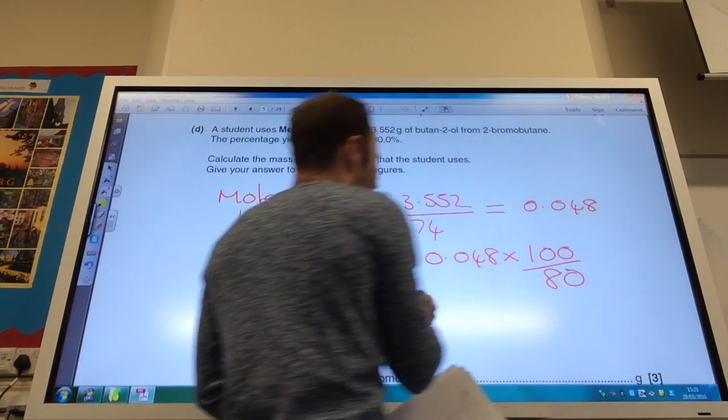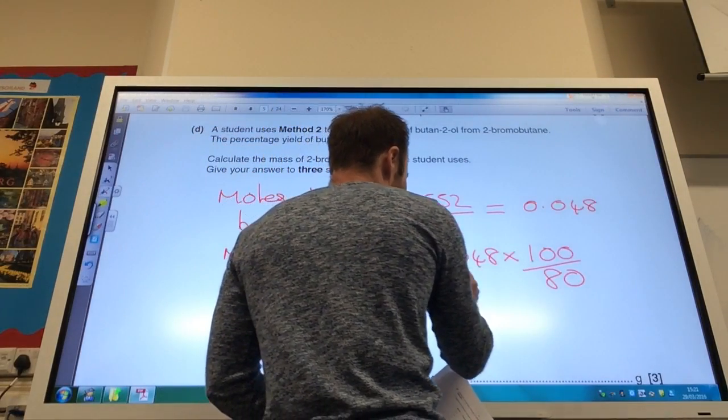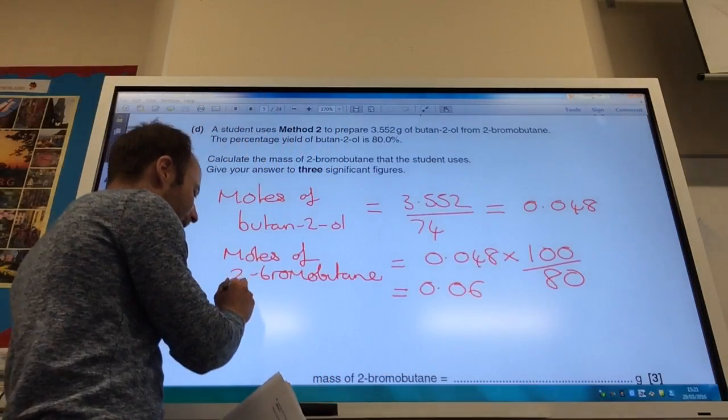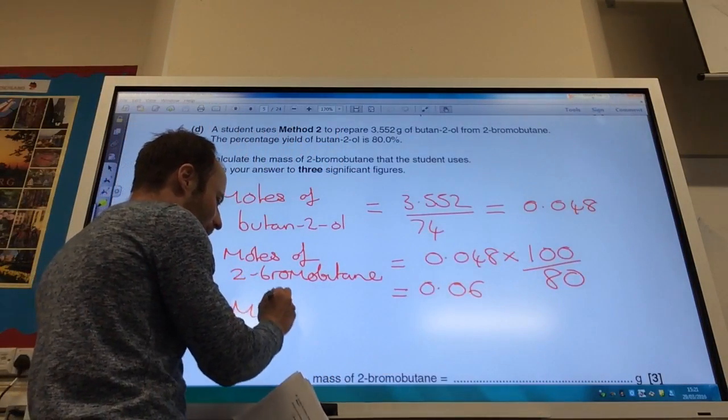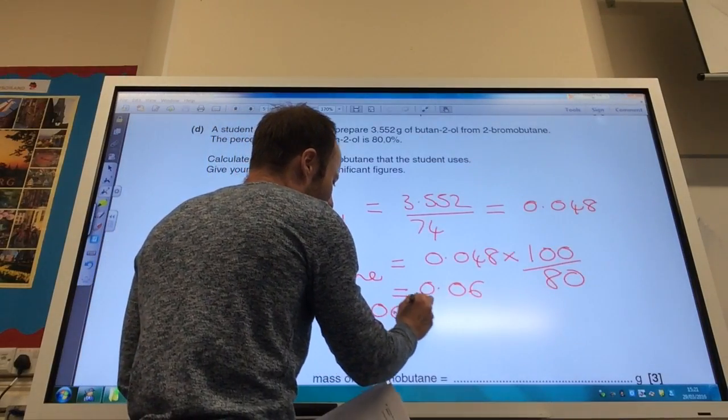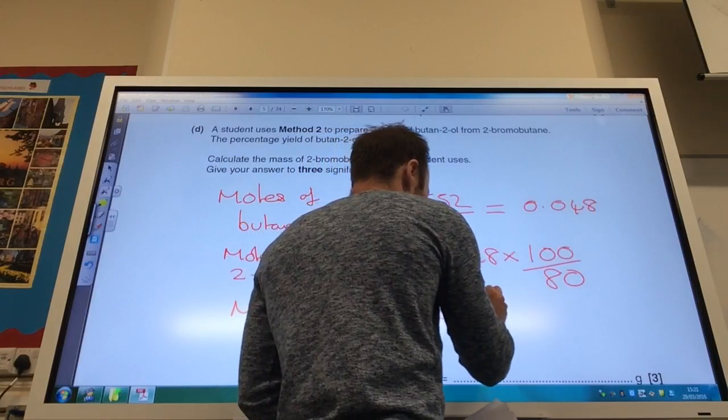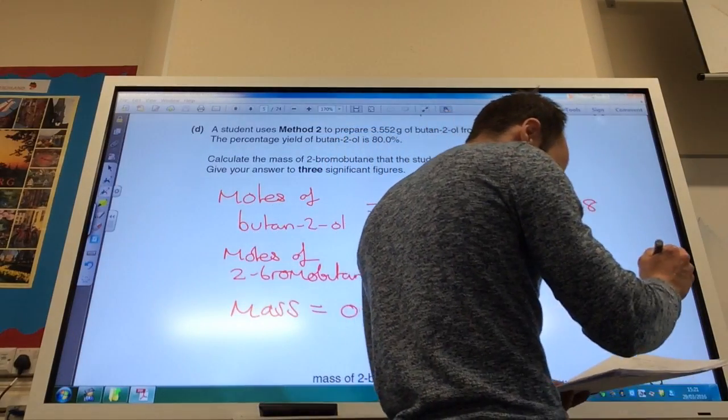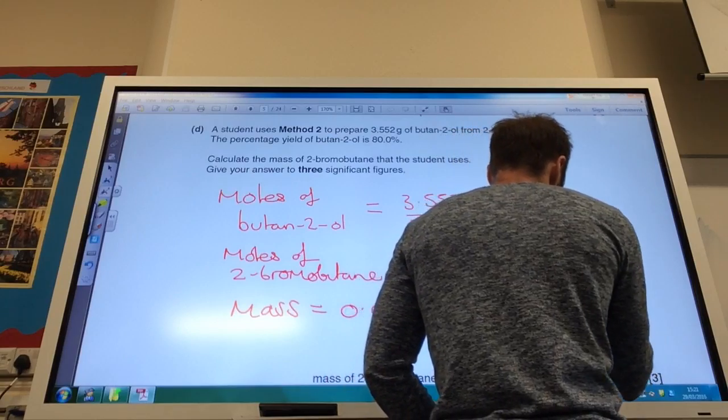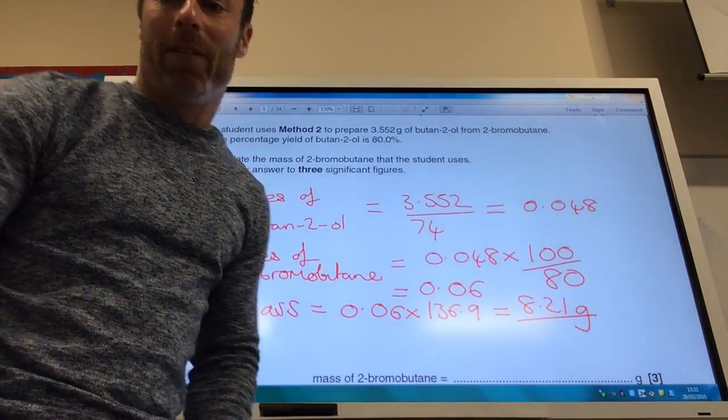And then for the mass of 2-bromobutane is going to be your number of moles times your molar mass which is 136.9. And that comes to 8.21 grams. Noting that they wanted it to 3 significant figures.